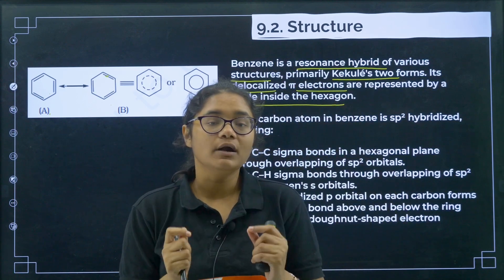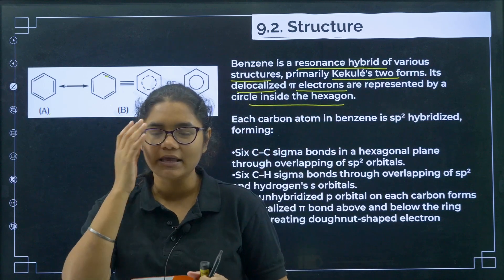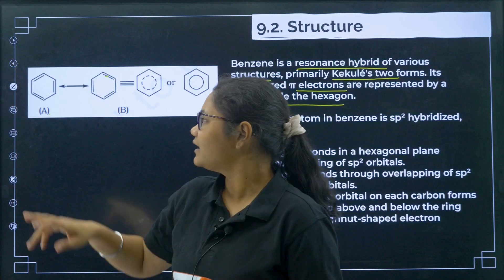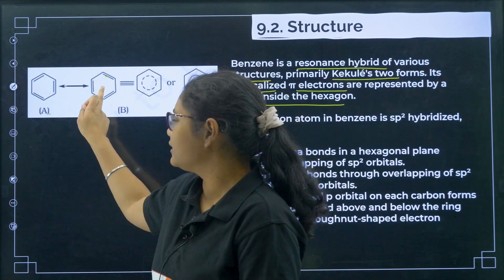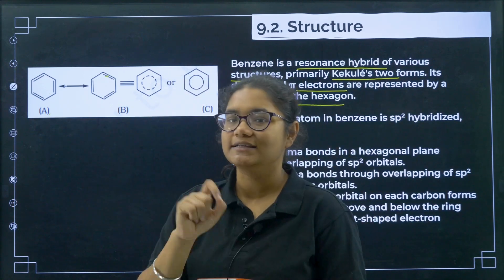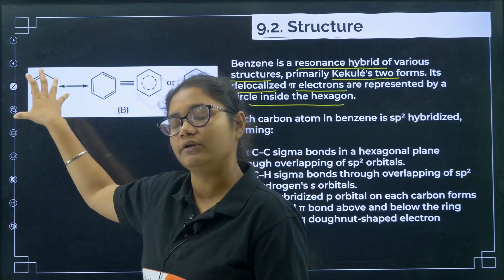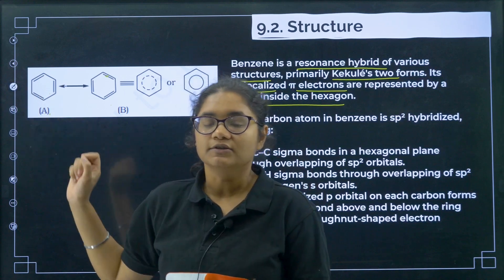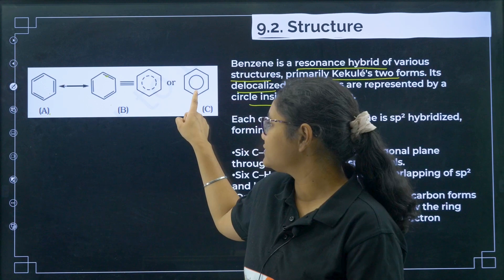In my practical viva, my teacher asked me to draw the structure of benzene. I first drew one Kekulé structure — incorrect. Then the other Kekulé structure — also incorrect. Finally, I drew the hexagon with a circle inside, and the teacher confirmed that is the correct structure. When you represent only one Kekulé structure, you are showing only one form, but electron density is present throughout the ring. So whenever a question asks you to draw benzene, the correct structure is the hexagon with a circle inside.